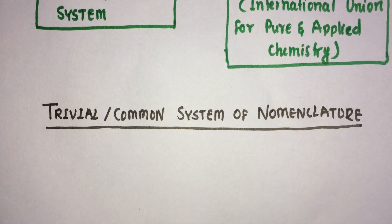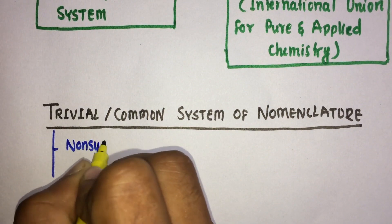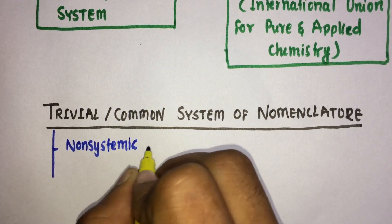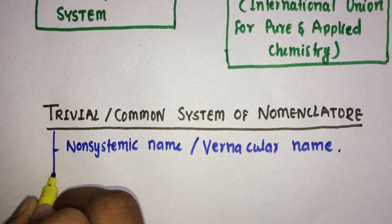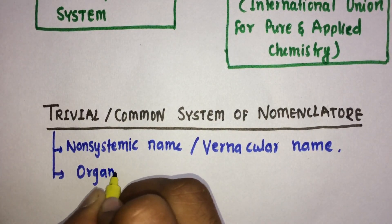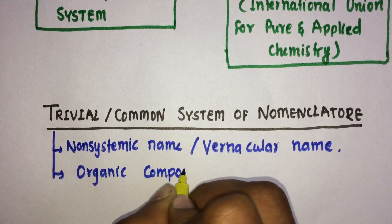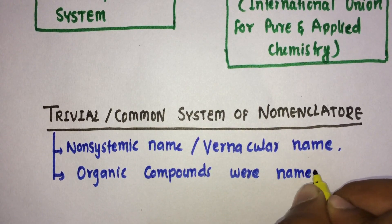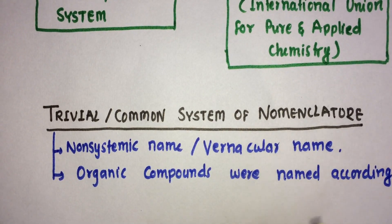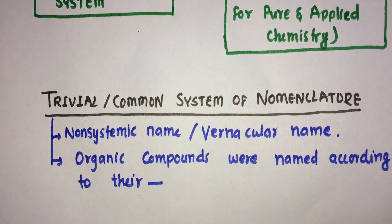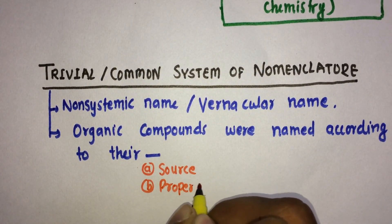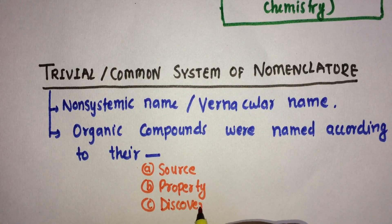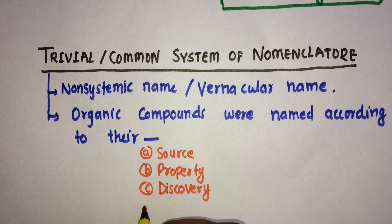In the common system of nomenclature, you will find that it is a non-systematic or vernacular naming system in which organic compounds were named according to their source, property, discovery, or structure.